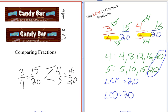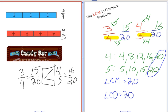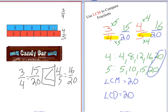16 twentieths is greater than 15 twentieths, so 4 fifths is greater than 3 fourths. If I pull my candy bars away, I can see that the 4 fifths is greater than the 3 fourths.